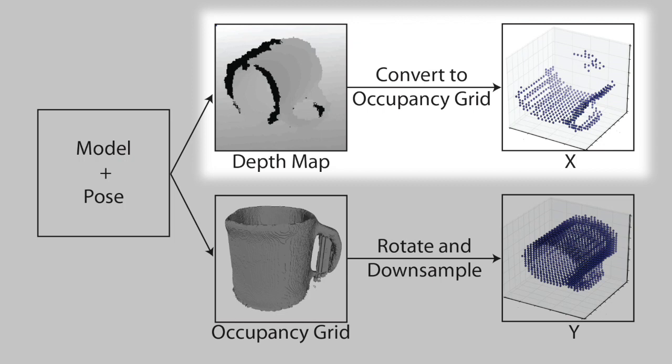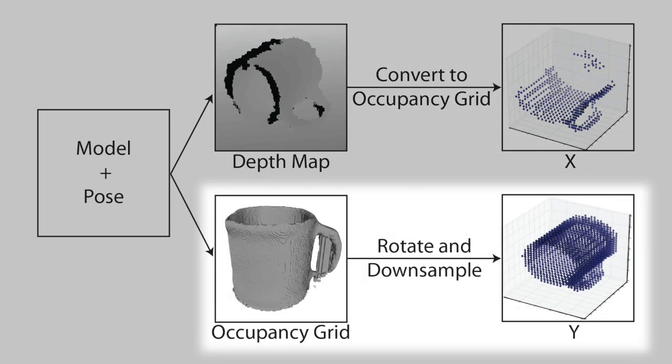The expected output occupancy grid, or Y, was created by aligning the ground truth mesh with the input.